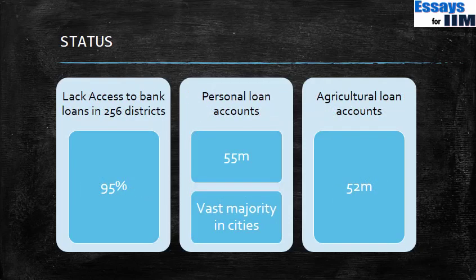Similarly, 95% of adults in 256 districts of India did not have access to bank loans — 95%, which is a very huge number. Also, personal loan accounts were 55 million compared to agriculture loan accounts which were only 52 million. Personal loan accounts are higher in number than agriculture loans even though agriculture supports the majority of our population, and personal bank accounts are vastly concentrated in cities. So loan services overall were not available to citizens, and whatever services were available were heavily skewed in favour of people living in cities.